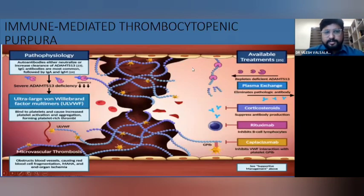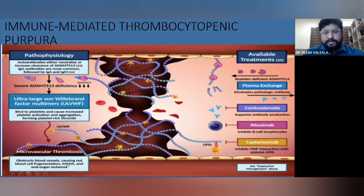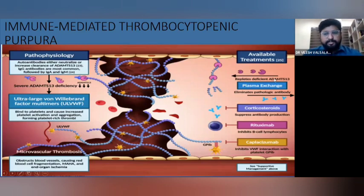Immune-mediated TTP involves autoantibodies that either neutralize or increase the clearance of ADAMTS13. IgG antibodies are most common, followed by IgA and IgM, causing severe ADAMTS13 deficiency, leading to ultra-large von Willebrand factor multimers which bind to platelets, forming platelet-rich thrombi, obstructing blood vessels, causing red cell fragmentation, microangiopathic hemolytic anemia, and organ ischemia. Treatment includes plasma exchange and plasma transfusions to replace ADAMTS13, corticosteroids to suppress antibody formation, and in some cases rituximab for B-cell inhibition and caplacizumab, which inhibits VWF interaction with the platelet GPIb protein.